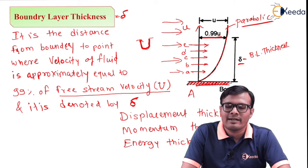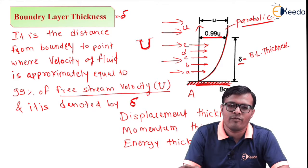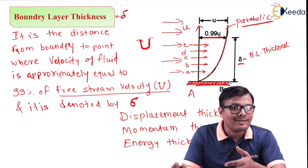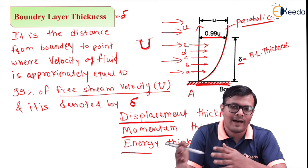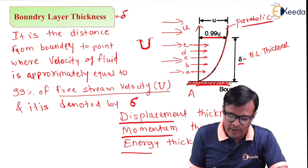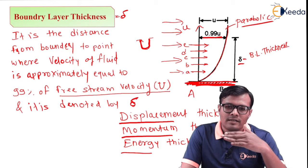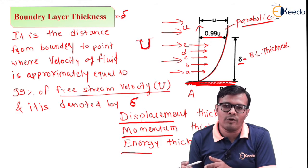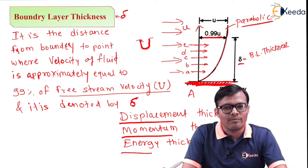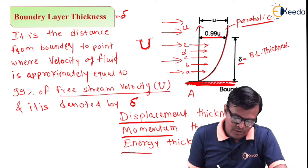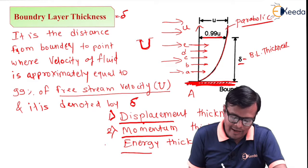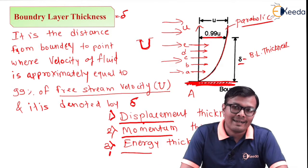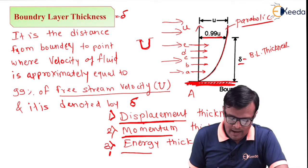Whenever we define these three terms, we compare the case with a boundary against the case without a boundary. The values without a boundary are larger; displacement, momentum, or energy is larger, and these values are reduced due to the presence of the boundary. So we increase the thickness of a layer such that the increased value of the respective term equals the original value when there was no boundary. To compensate discharge, momentum, and energy with original values, we increase the thickness of fluid, and that increment is the displacement thickness, momentum thickness, and energy thickness.